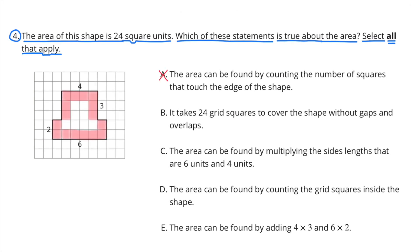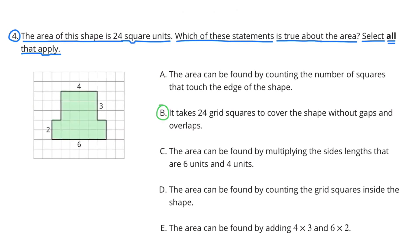A does not apply. This is more like finding the perimeter, not the area. B does apply. It takes 24 grid squares to cover the shape without gaps and overlaps. That is the area.